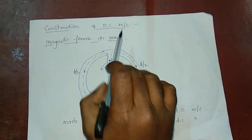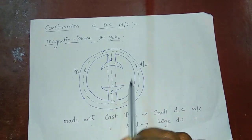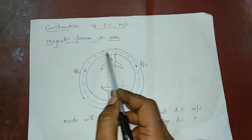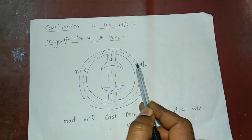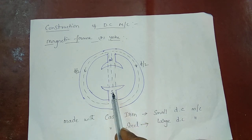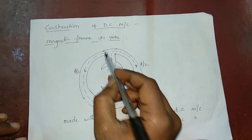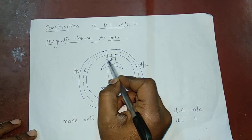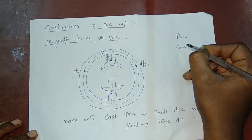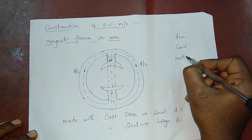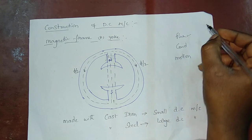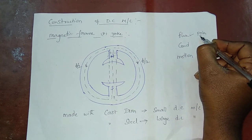The construction features of DC machines are the same for both generators and motors. The main parts are: the magnetic frame, field poles, flux, and conductors. For relative motion, you need flux, field poles, and magnetic poles. If we have two magnetic poles — a north pole and a south pole — the winding is placed around these poles with DC supply.